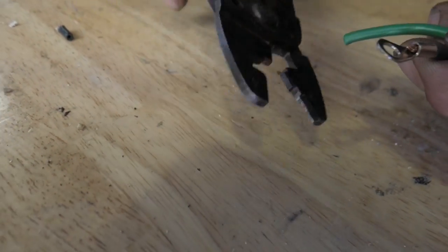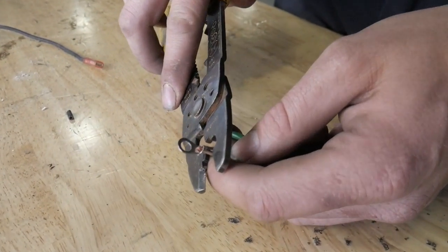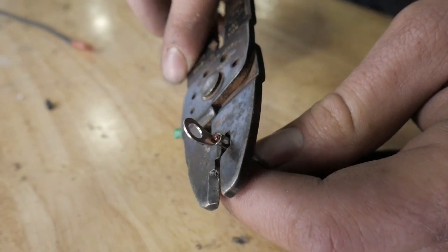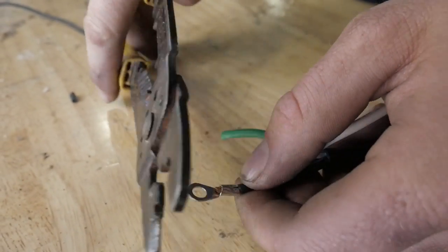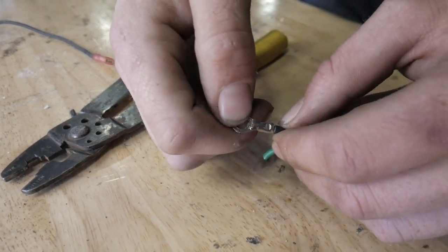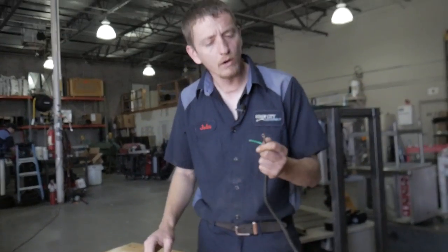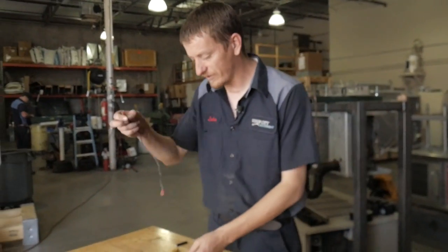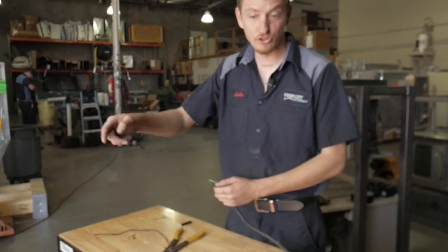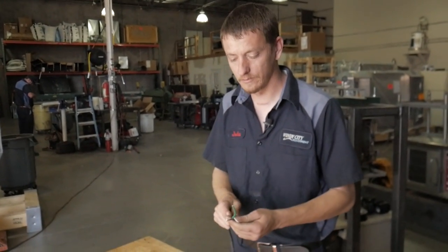Take it, squeeze it real tight. It's now crimped, it's not going to come off. You're ready to put it on. This will work on your eyelid type, female type, and the one I just chopped off. That's how you replace a terminal.